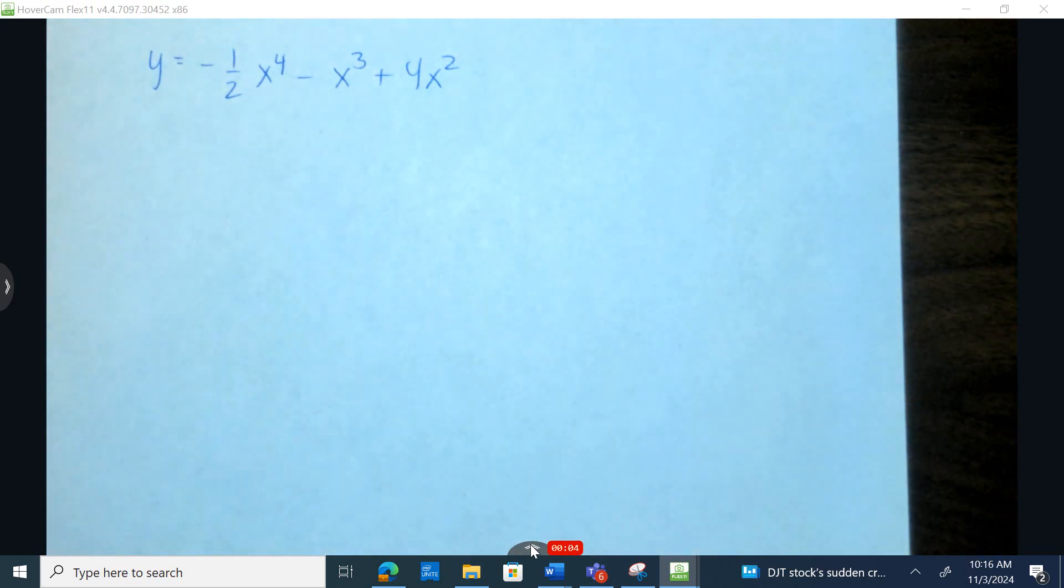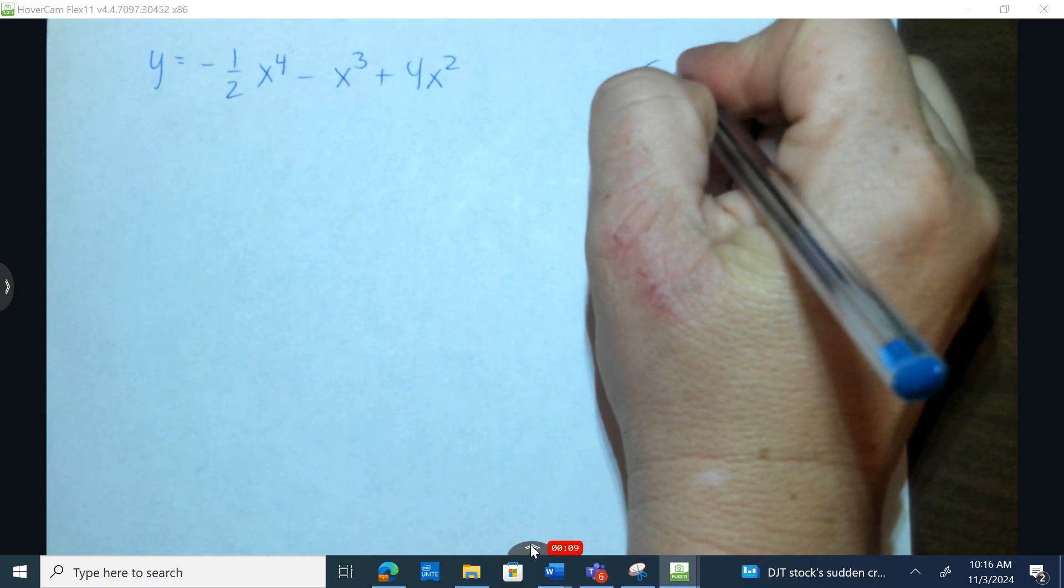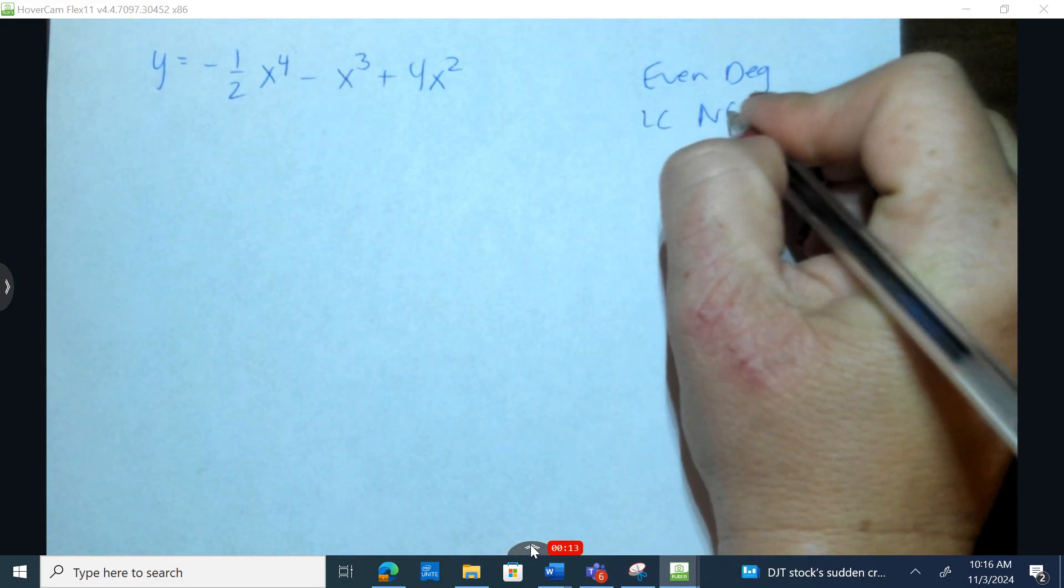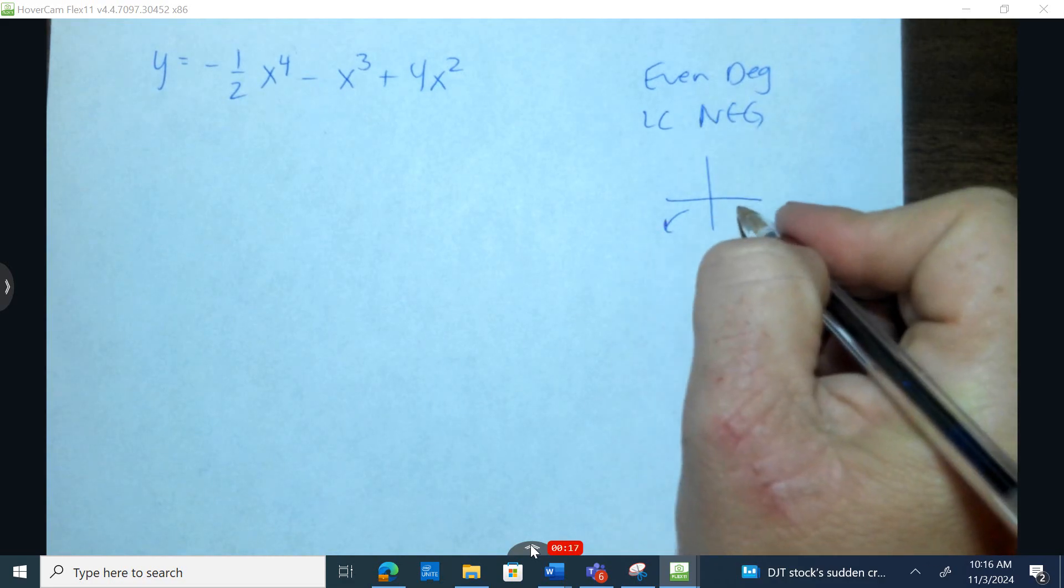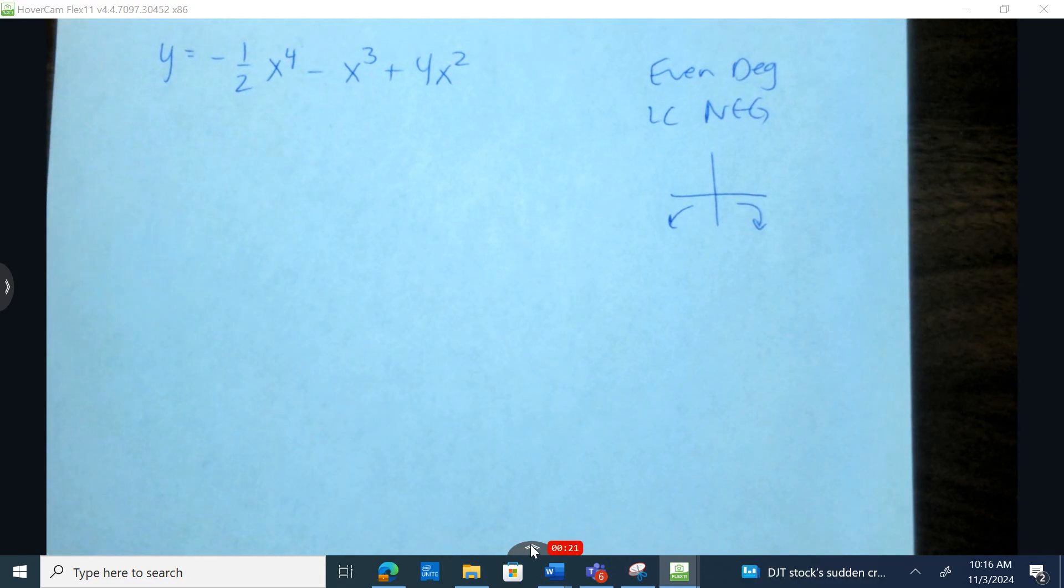Number 13, we're asked to sketch a graph of the following equation. Notice that we have an even degree and a leading coefficient that is negative. So you have to know that even degree with a negative leading coefficient means down on the left and also down on the right. Now I recognize that I can factor out of these.